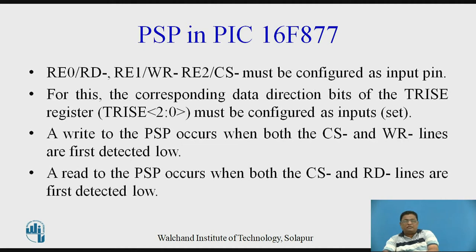The pins RE0/RD bar, RE1/WR bar, and RE2/CS bar of the PIC16F877 must be configured as input pins to operate Port D in parallel slave mode. To configure these three pins as input pins, we use the TRISE register. The corresponding data direction bits of TRISE — that is, TRISE bits 2 to 0 — must be configured as input, meaning bits 2 to 0 of TRISE must be set.